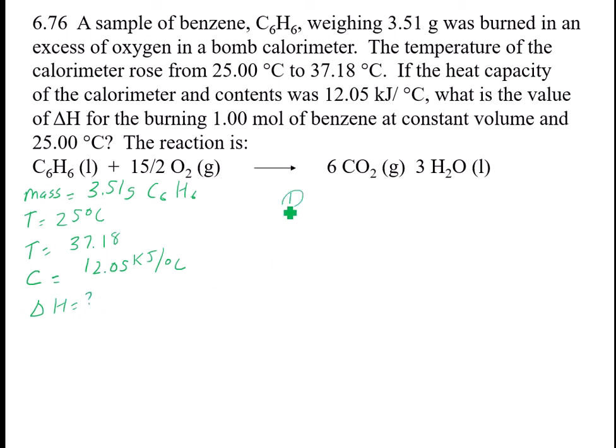The Q is going to be C delta T. I need to find delta T first, so delta T is simply the 37.18 minus the 25 to give me 12.18 degrees C. This means that my C of 12.05 times 12.18 gives me 146.77, and that's in kilojoules.